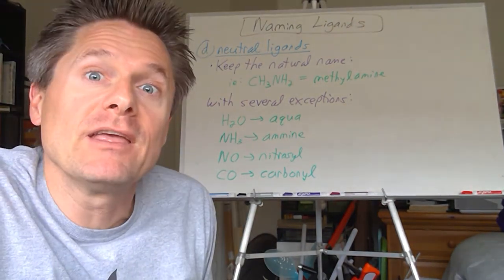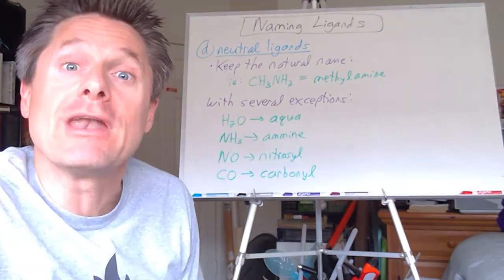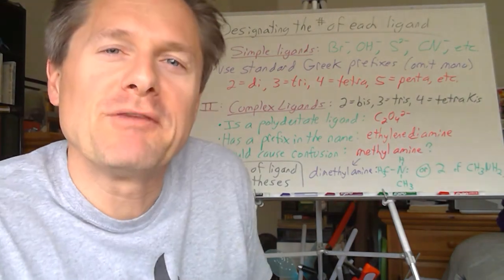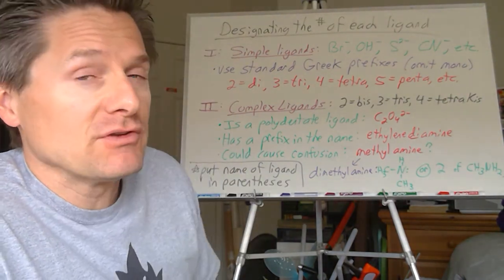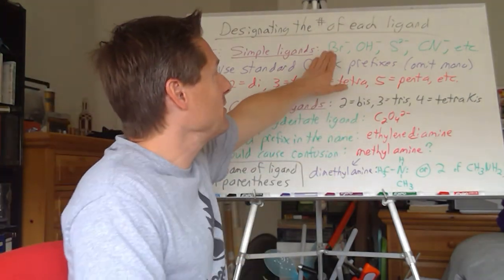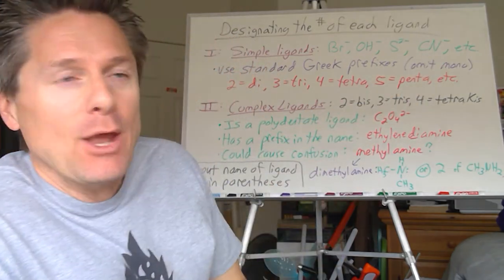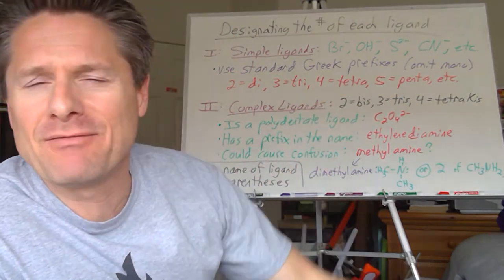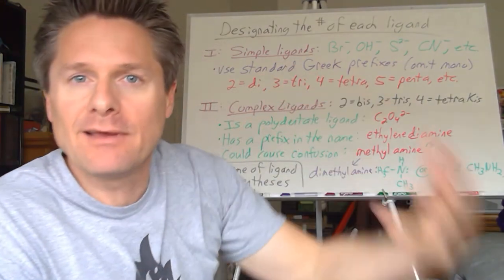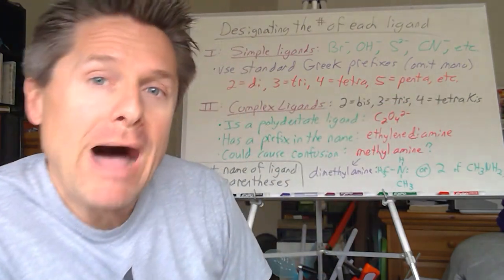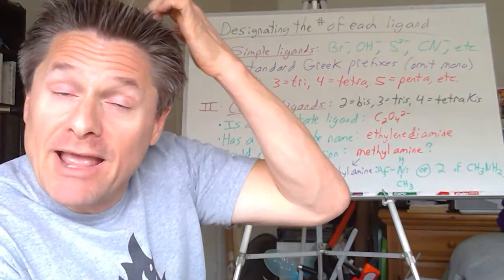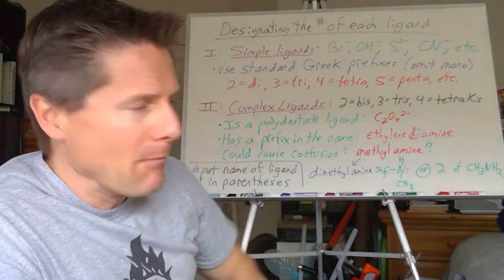Now for prefixes — it gets a little weird. I'm going to break ligands into simple and complex ligands. Simple ligands — your bromo, hydroxo, thio, cyano — use standard Greek prefixes: di for two, tri for three, tetra, penta, hexa, and so on. We omit mono; if you only have one bromo, you don't say monobromo, just bromo. But anything else, you've got to tell them.